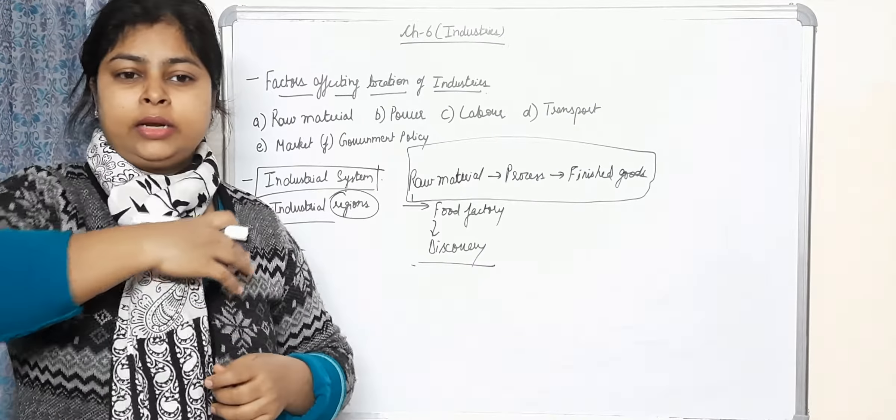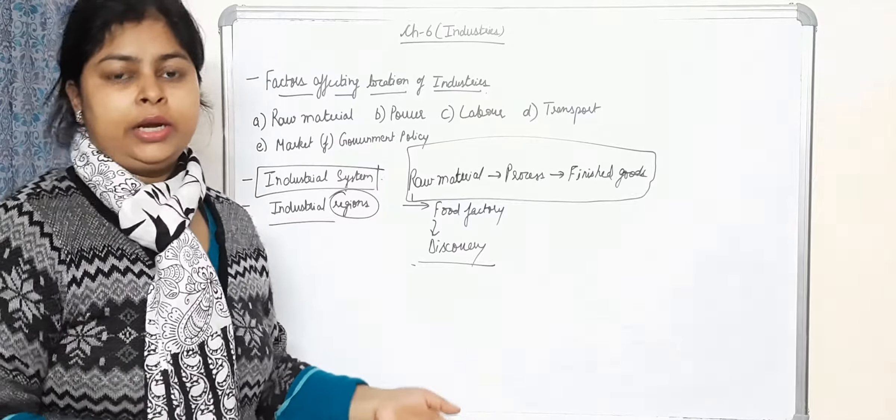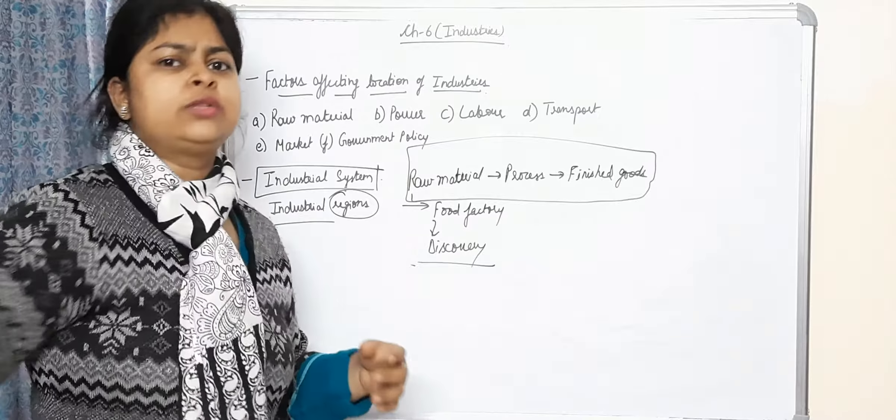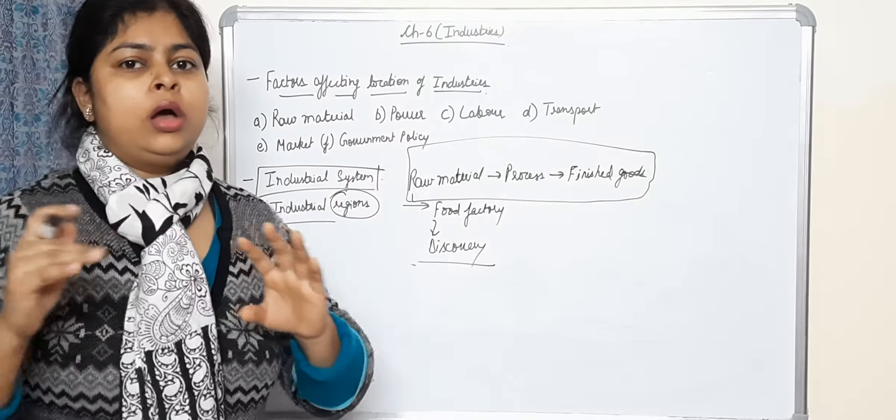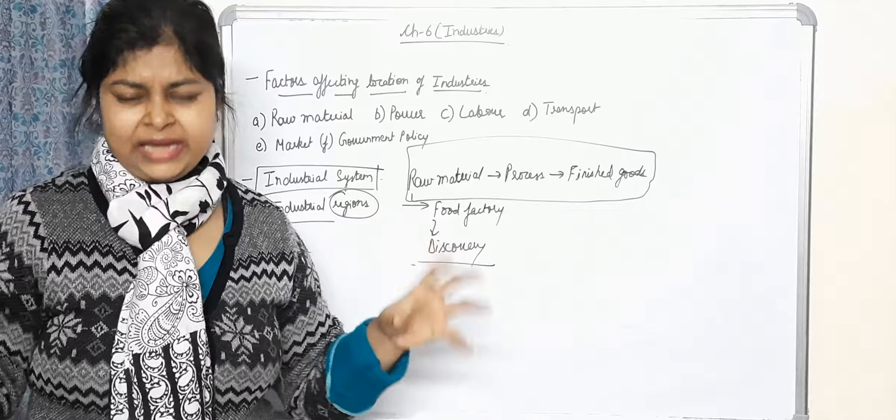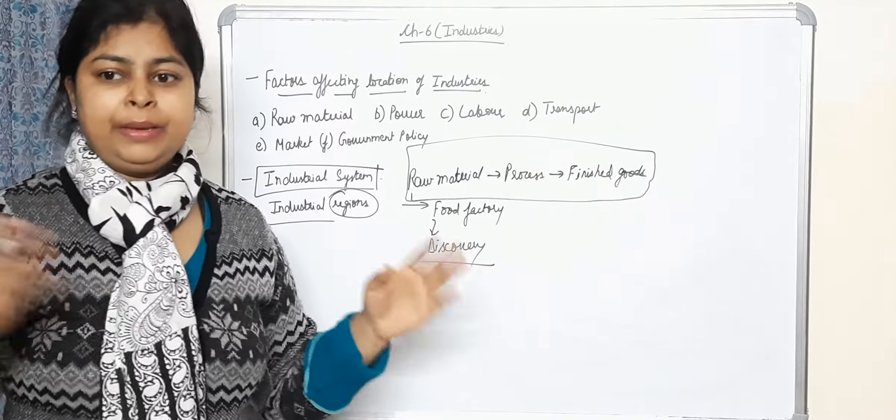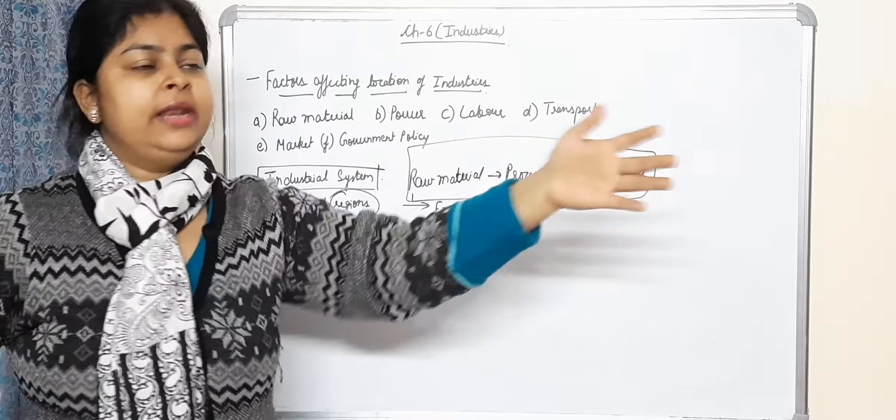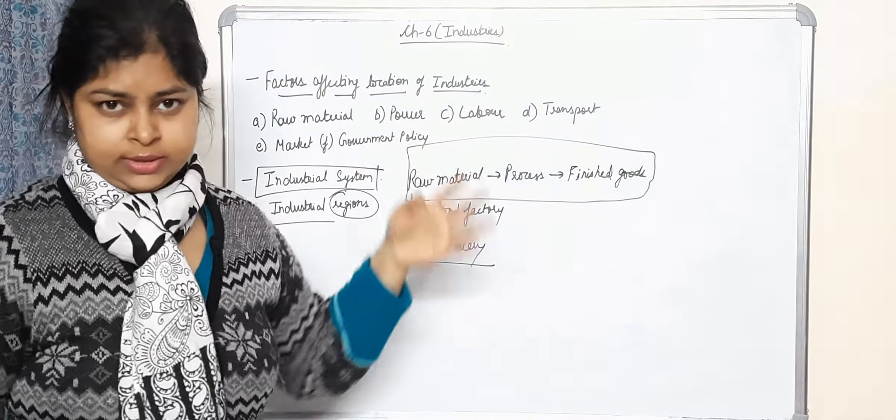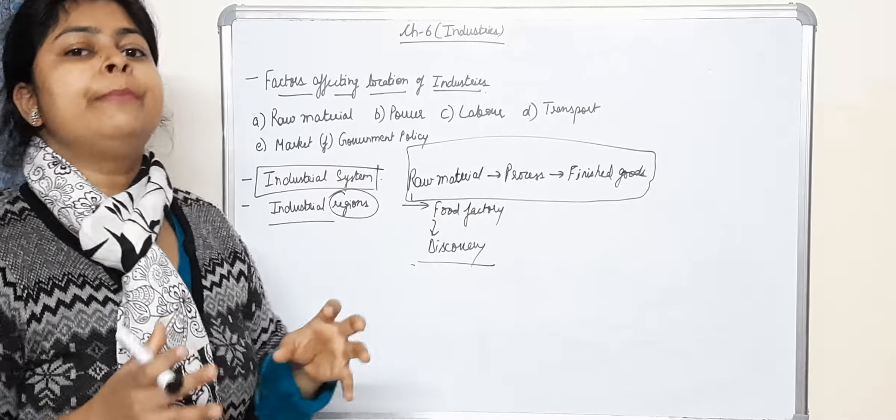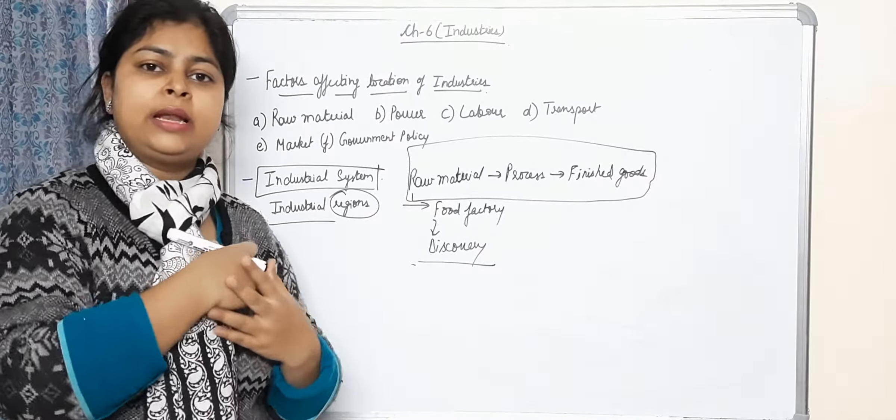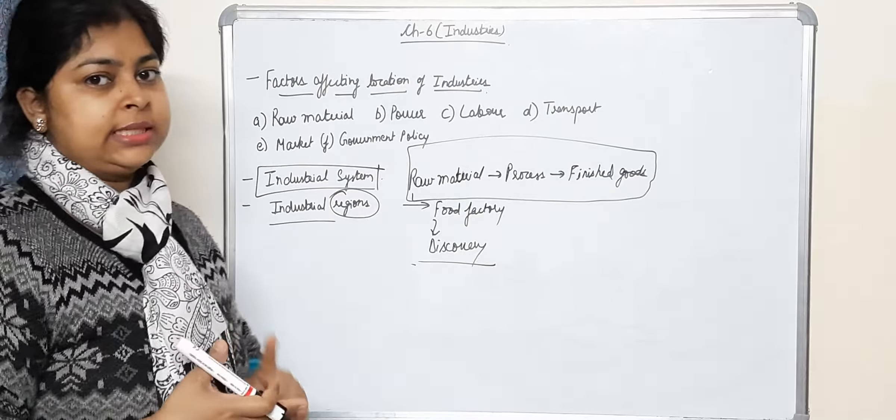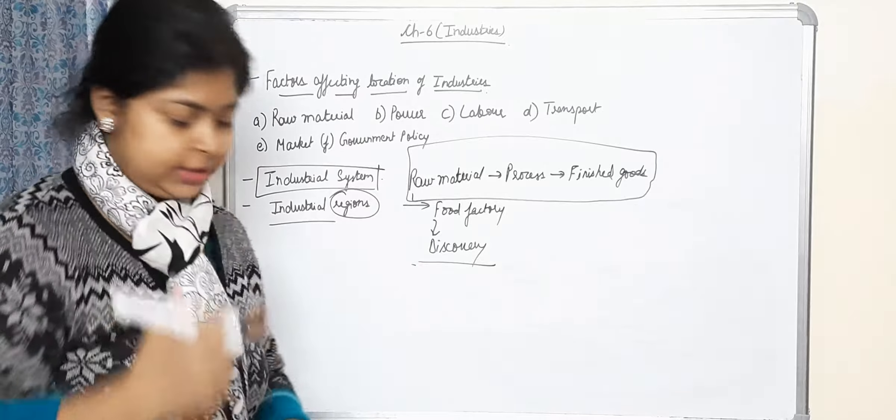In Noida also, if you go to sector 62, 63, you will find industries only. There is no place where people live. If you cross the road to residential, then you find industries one after another.